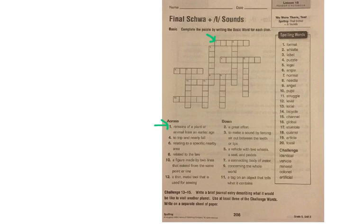So number 1 across reads remains of a plant or animal from an earlier age, and oftentimes people love to find these, right? We have fossils. If you look through your spelling list, the word fossil is number 20 and it's f-o-s-s-i-l. I actually went through and just typed those in because there was no way I was going to be able to write those letters in the little tiny boxes there. So number 1 across is fossil.